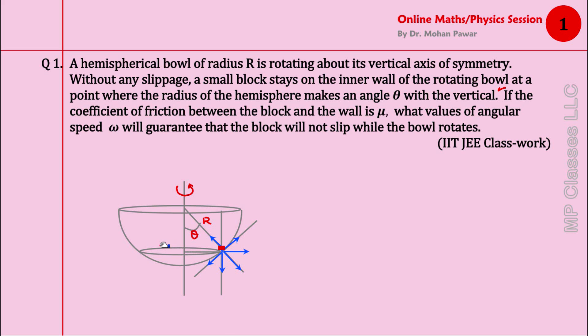This shows the circle, the orbit in which the block rotates, so that's not the radius r. We go back and continue: if the coefficient of friction between the block and the wall is μ, what values of angular speed ω will guarantee that the block will not slip?